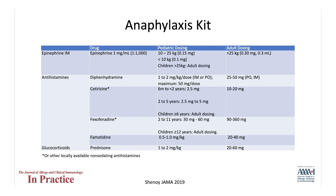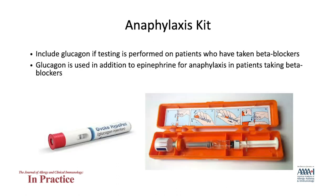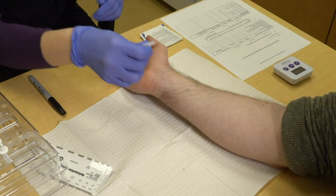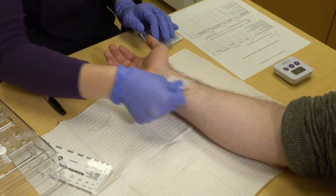Check the kit before each test to make sure nothing is missing or expired. Any drug which is used should be immediately replaced. Although all sites performing immediate hypersensitivity testing should have access to a similar kit, anaphylaxis resulting from drug testing is uncommon. If your clinic routinely performs testing in patients on beta blockers, your anaphylaxis kit should have glucagon.